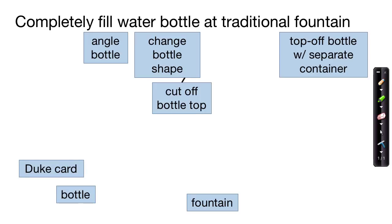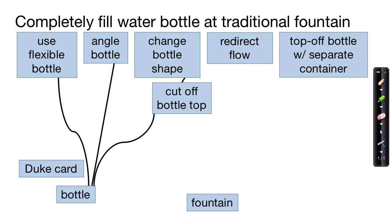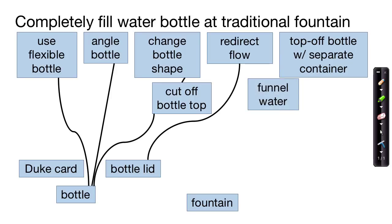Another resource might be your Duke card or your student ID card. Maybe we could use a different bottle or a flexible bottle — that requires the resource of the bottle, so we'll connect those two ideas. Angling the bottle, too, is a way of using the resource of the bottle. Another way to solve the problem might be to redirect the flow of the water. The bottle lid is also available, and that's actually a way of redirecting the flow by using the bottle lid. We could redirect the flow using the bottle lid, or funnel the water, which is also a way of redirecting the flow.